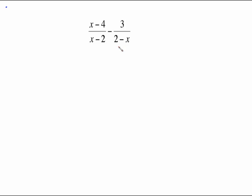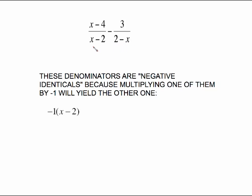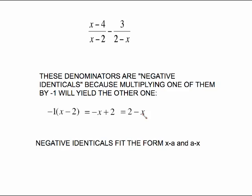If you look at these two denominators you might think that the common denominator is going to be the product of the two denominators. But if you recall the negative identical lesson from a few videos ago you can save yourself a little bit of hassle. x minus 2, 2 minus x are negative identicals because multiplying one of them by negative 1 will yield the other one. So take the first denominator for example. Multiply by negative 1. It's just a matter of changing those signs. That becomes negative x plus 2. Switch the order and you recognize oh yeah there's your 2 minus x. Negative identicals fit the form x minus a and a minus x. Same two terms. They both have a and x in it. They have a minus between them but the order is different.